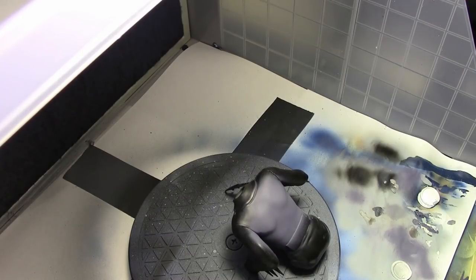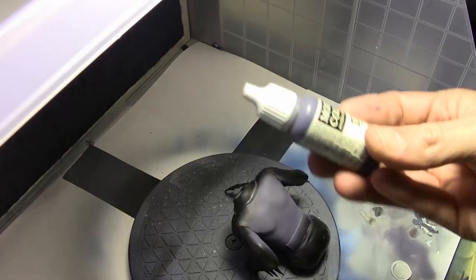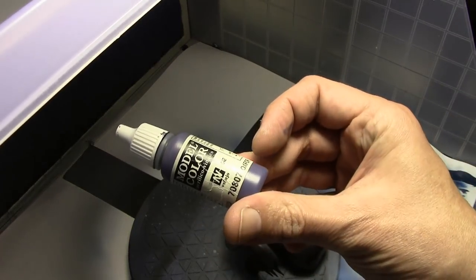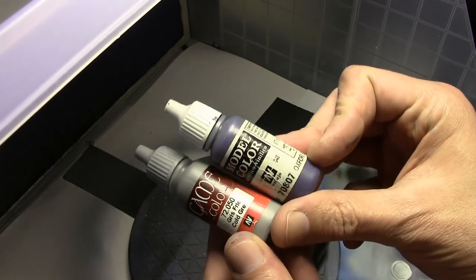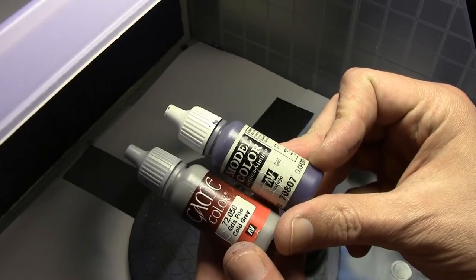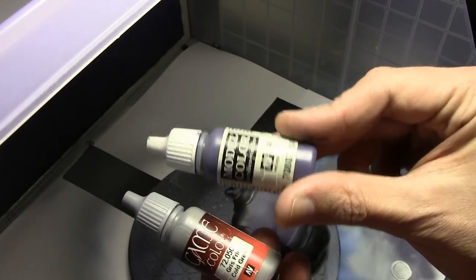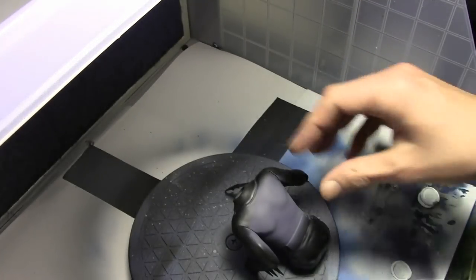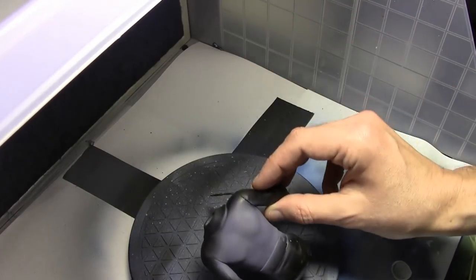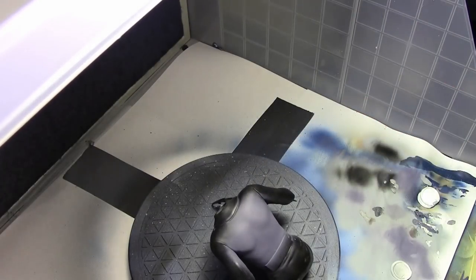To make that I'm using Oxford blue mixed with some Game Color cold gray. It's about I'd say 70% Oxford blue, so that gives us a nice cool color. So let's go ahead and do this.